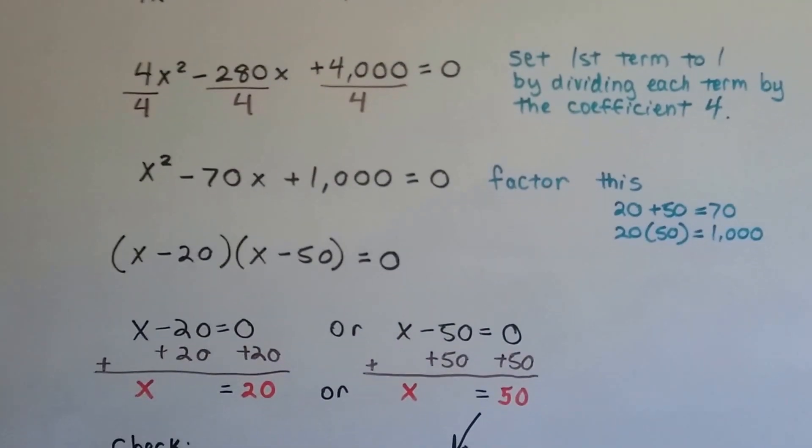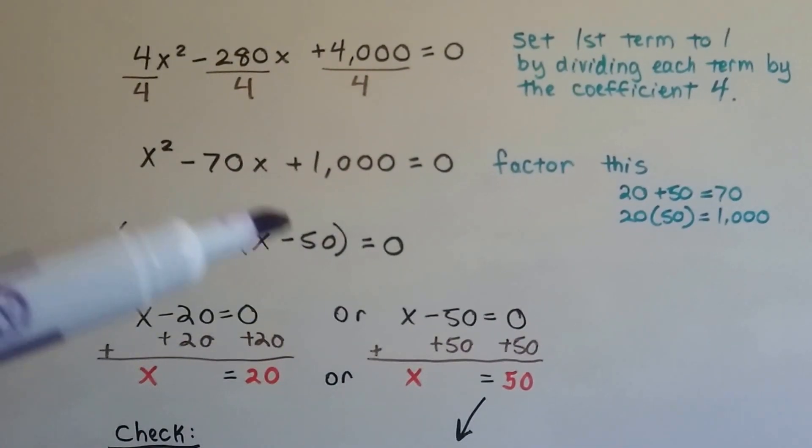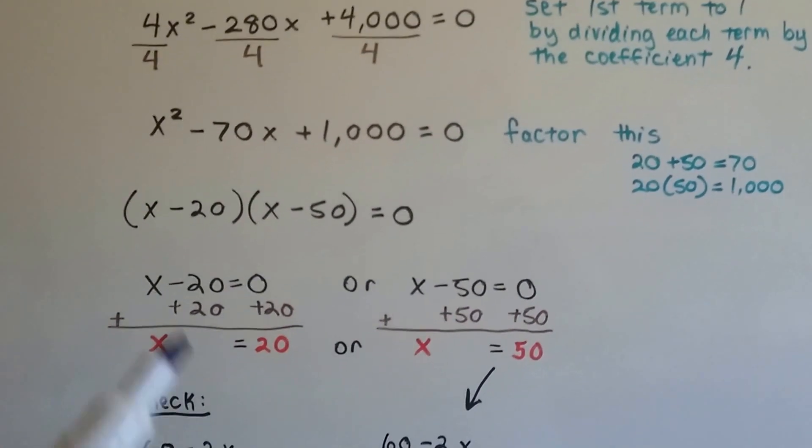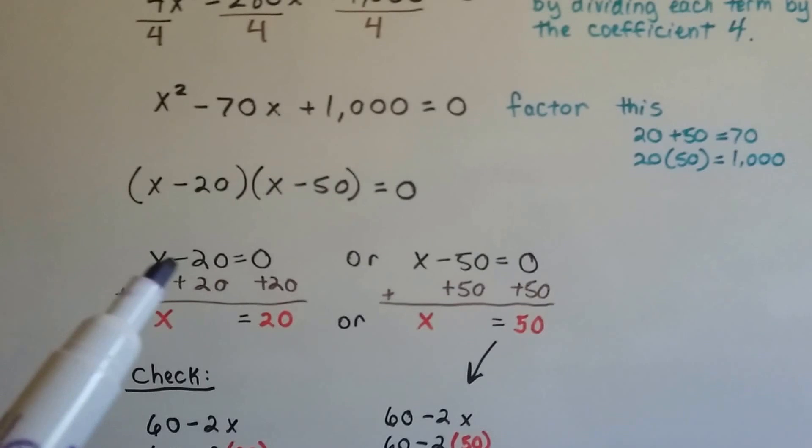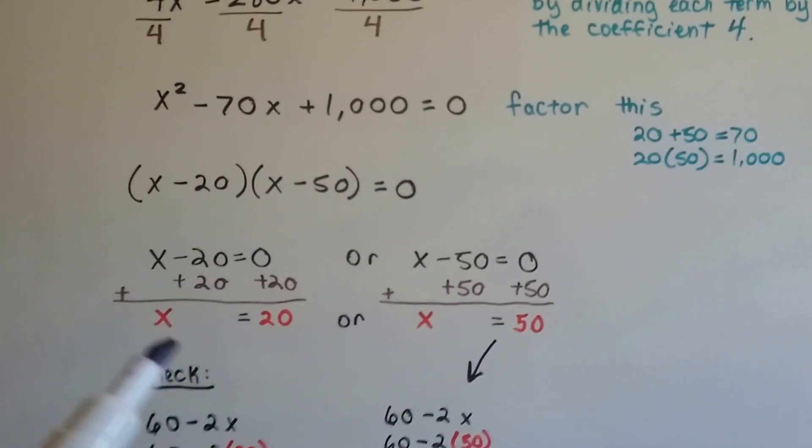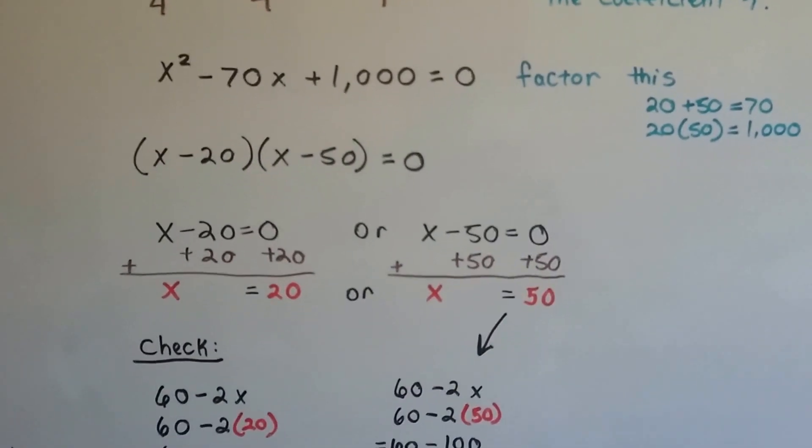Using the principle of zero products, we do x minus 20 equals zero, or x minus 50 equals zero. We add 20 to each side to isolate x and create a zero pair. So we get x equals 20, or we do the same thing to this side and we get x equals 50.